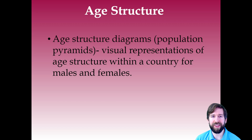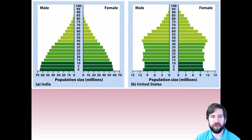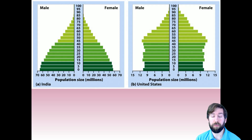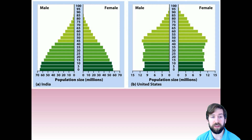A very powerful tool is the age structure diagram, often shown as population pyramids — visual representations of age structure within a country for males and females. There are three different groups shown by three different colors. The dark green at the base represents children who are not yet reproductive. The medium green is the reproductive portion of the population — those having offspring. The lighter pea green represents those past their reproductive years living into old age. For India, you can see a wide base and a large reproductive population, with a taper off at the top — not many people live into their sixties, seventies, and eighties.